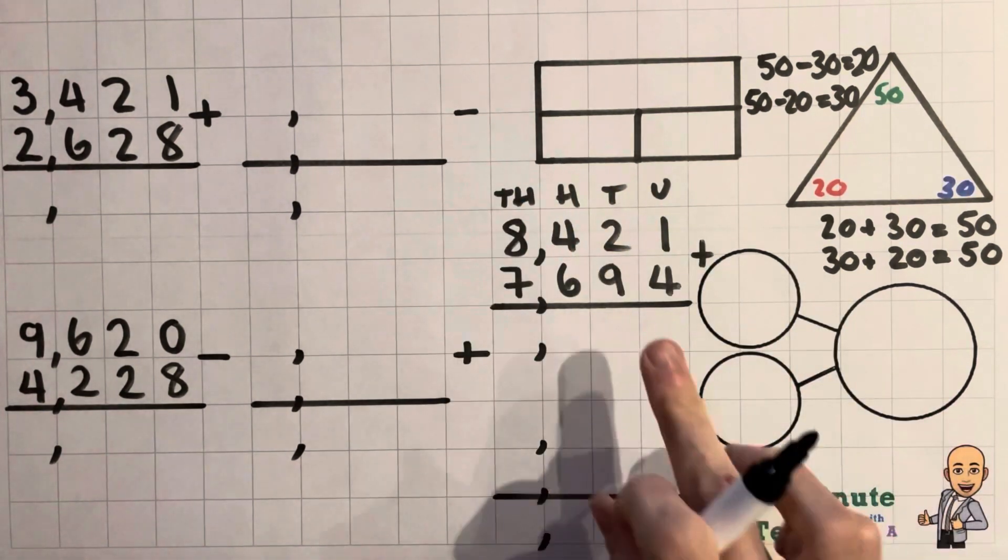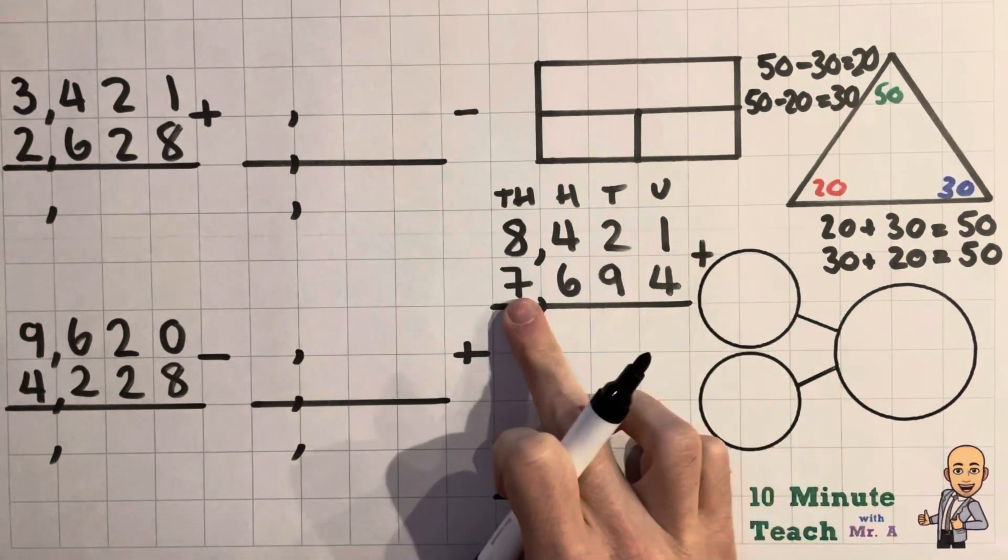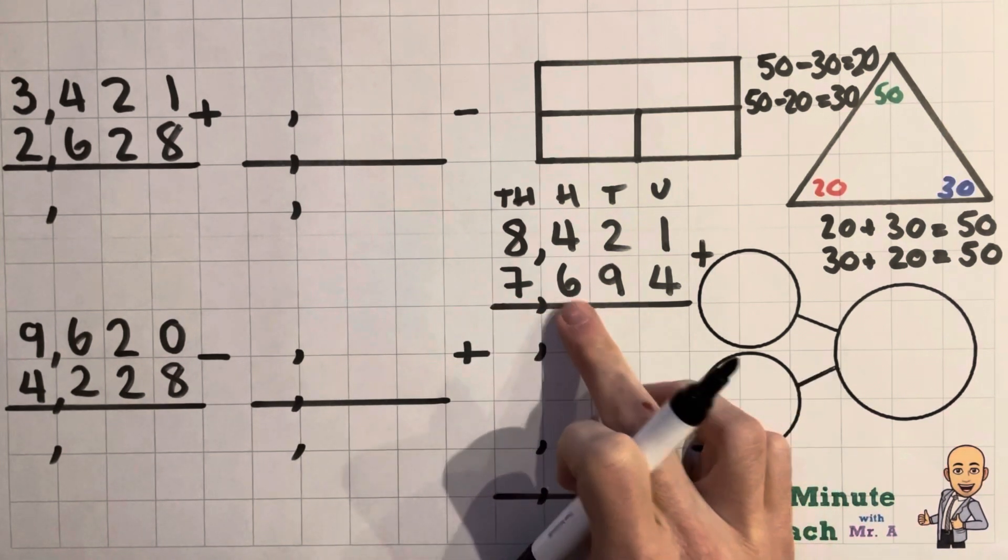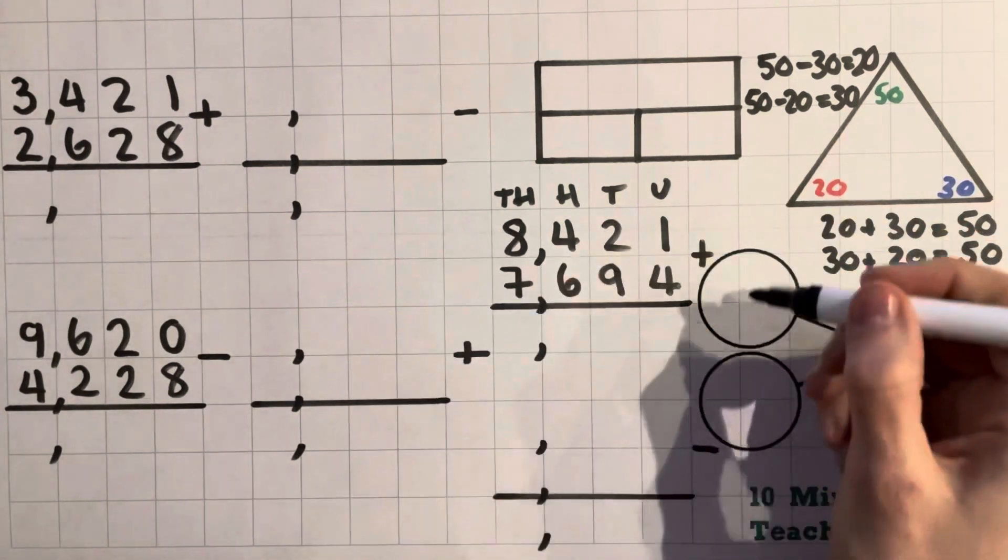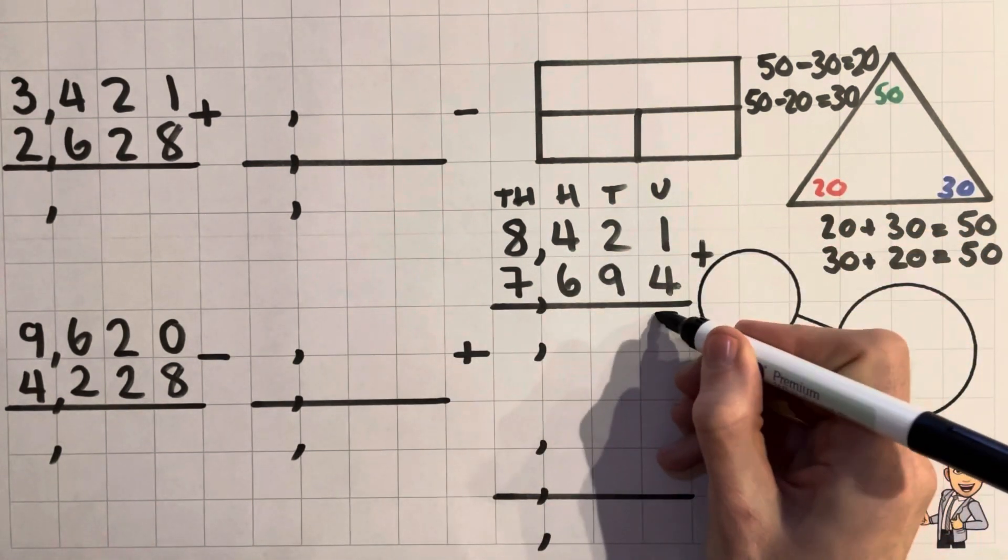So I'm going to fill this one in first of all. So 8,421 add 7,694. So here we go. So I'm going to zip through this one for you. So 1 add 4 is 5.